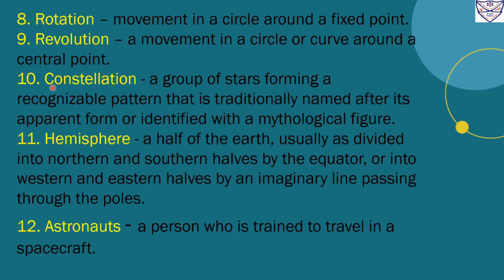Number 10. Constellation. A group of stars forming a recognizable pattern that is traditionally named after its apparent form or identification.